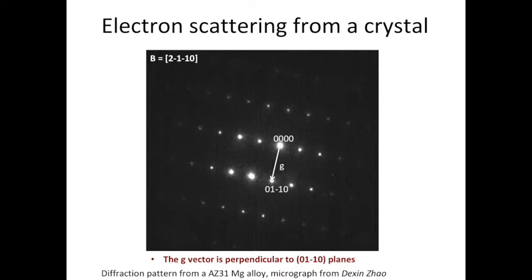We don't have to limit ourselves to only 1g. So let's identify another diffracted spot, (02-20), and draw a vector. So this is called 2g.